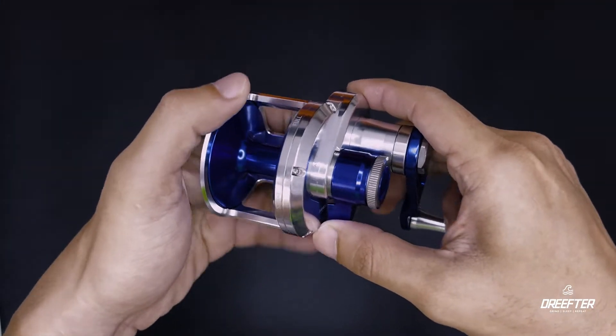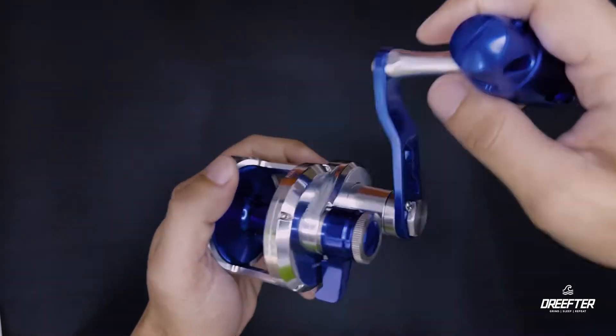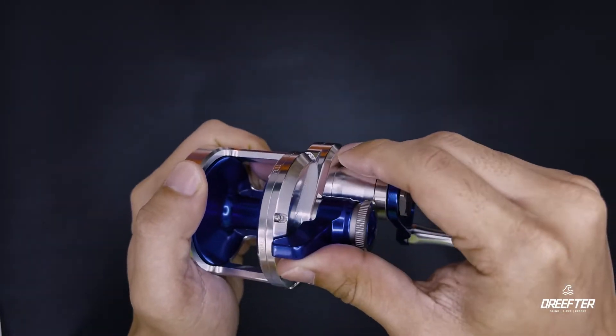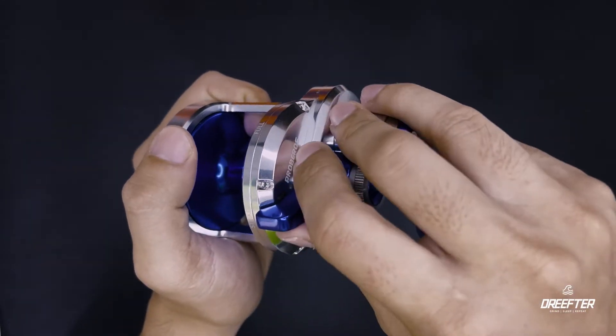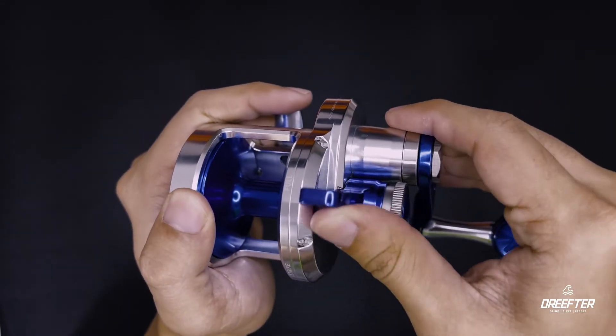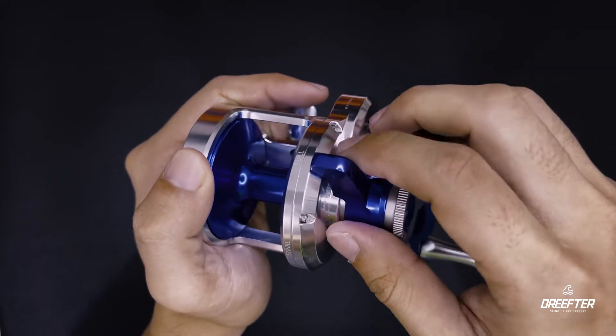So ang reel na ito ay lever drag system. So pag naka strike ka, set mo lang yung lever sa strike. If you want to increase the power of the drag, adjust mo lang yung lever dito. So yan, naka full drag na siya.